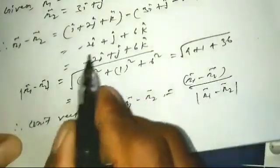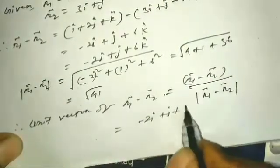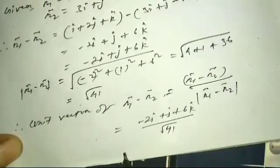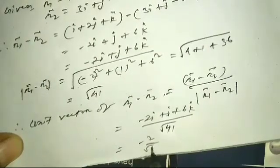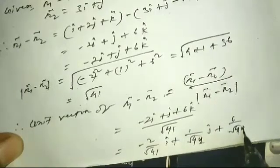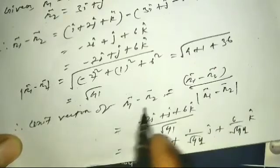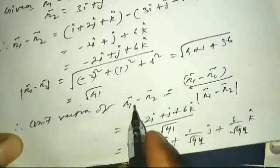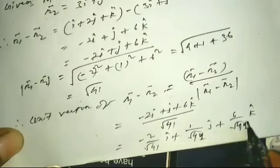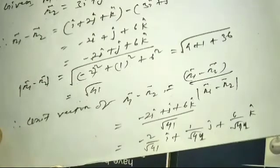Therefore, the unit vector of r1 minus r2 is equal to (minus 2i-cap plus j-cap plus 6k-cap) divided by square root of 41. So the answer is: minus 2 divided by square root of 41 i-cap, plus 1 divided by square root of 41 j-cap, plus 6 divided by square root of 41 k-cap.